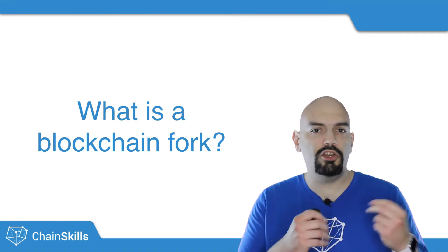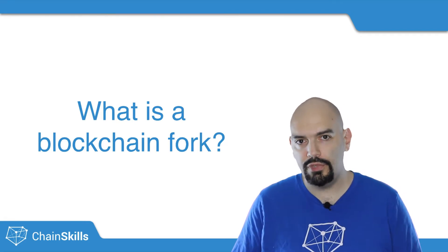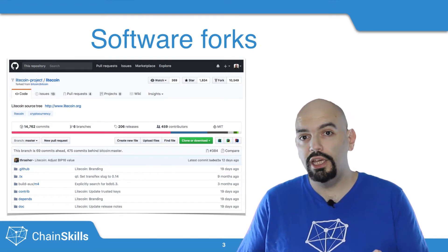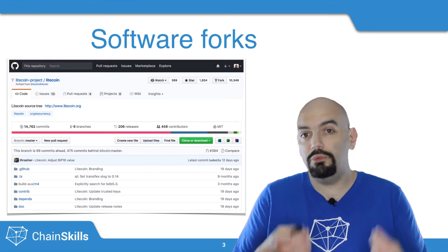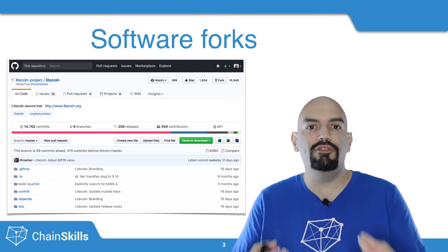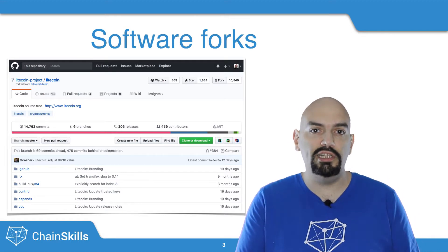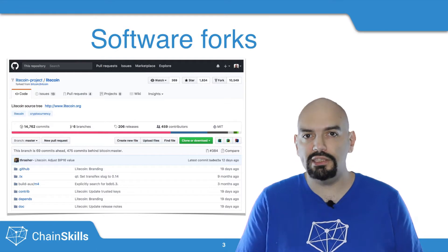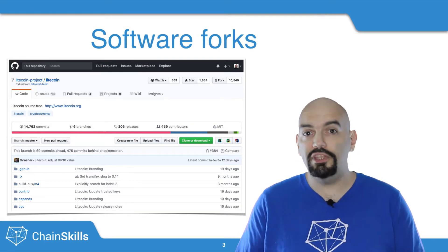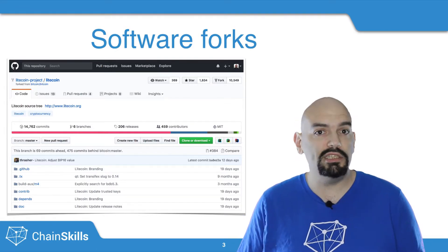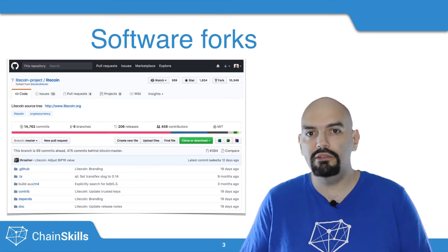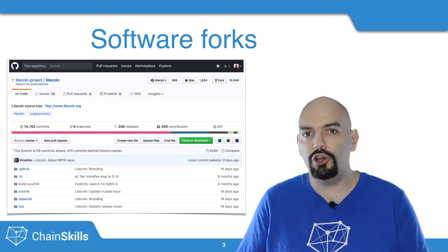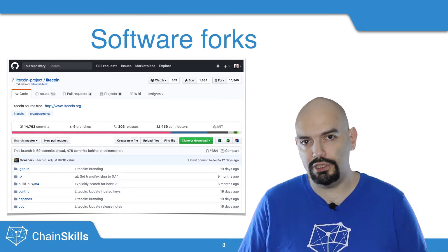First, this is not a code fork, but a data fork. In software development, what we generally talk about when we mention a fork is when a project's code gets replicated into a new code base that evolves independently of the original project. This is something that versioning systems like Git make very easy. But this is a software fork. It does exist in a blockchain ecosystem too, like Litecoin's code being a fork of Bitcoin's code, but what we are going to talk about today are data forks.